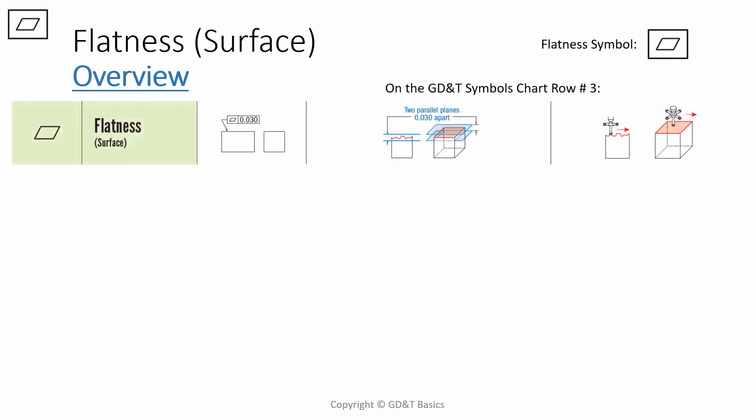Now let's go over flatness as it applies to a surface. Surface flatness can be found on your GD&T symbols chart at row number three. Flatness is never relative to a datum, and surface flatness cannot be used with the MMC or LMC modifier. However, we need to note that flatness can also be applied to a feature of size, and in this case you can use MMC or LMC. We'll discuss more on this later.